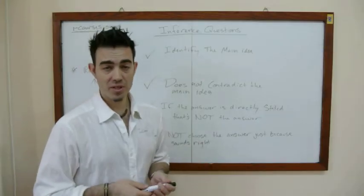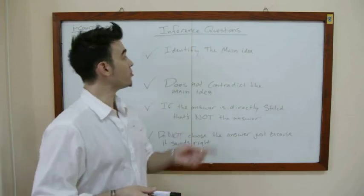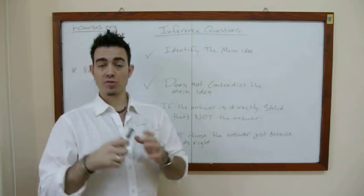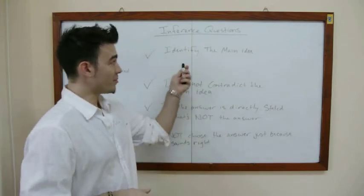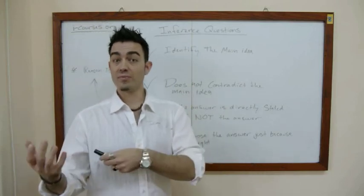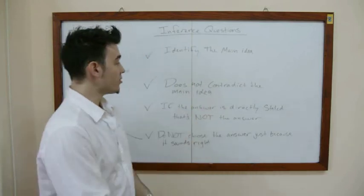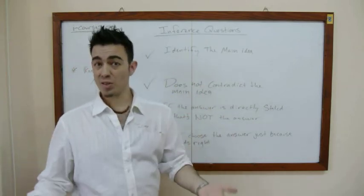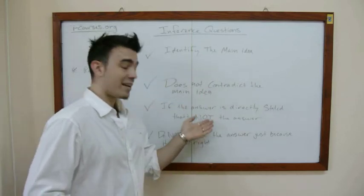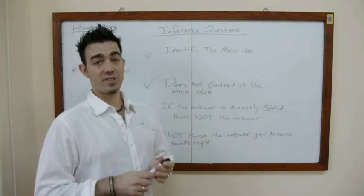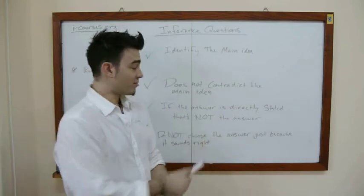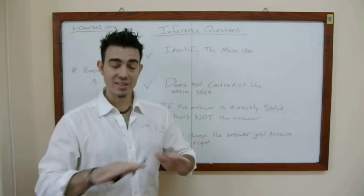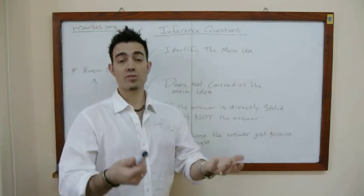From this example, it's really important to identify the main idea — either of the whole passage or just a specific part they're looking for. Usually, the main idea is not going to change throughout the whole passage. Make sure that the answer you choose does not contradict the main idea. Remember, the answer is not going to be directly stated. If there's an option that has something directly stated in the passage, even though that information may be true, that's not going to be the answer — it's an inference question.